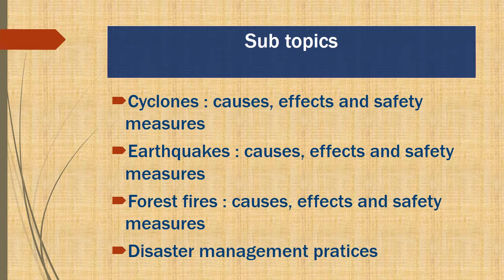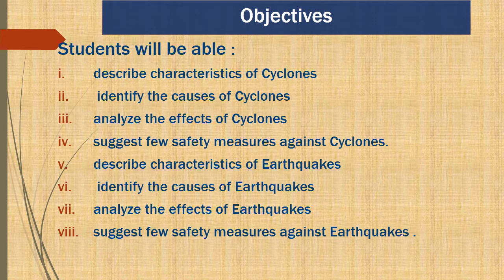By the end of the chapter we will discuss disaster management practices. The objectives of week seven are: to describe the characteristics of all natural disasters, to identify their causes, to analyze their effects, to suggest safety measures to avoid hazards, and to discuss disaster management practices.